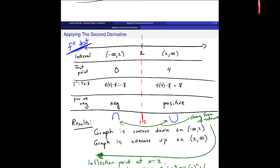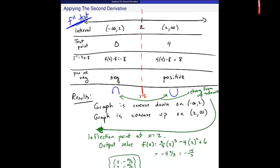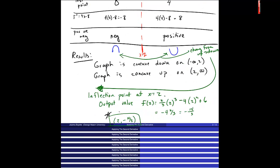From the first video about concavity, we got these intervals: minus infinity to 2 where the function is concave down, and 2 to infinity where it's concave up. We also found an inflection point at x equals 2, y equals negative 14 thirds. I'll be using all of that information on the graph.